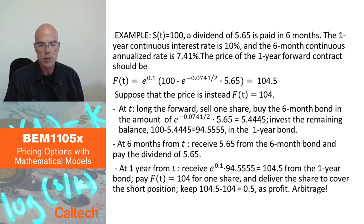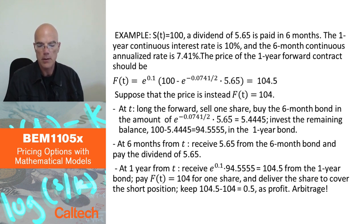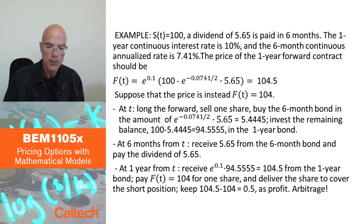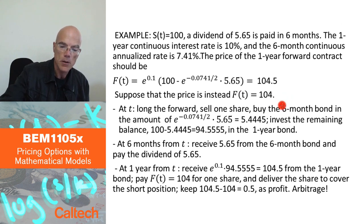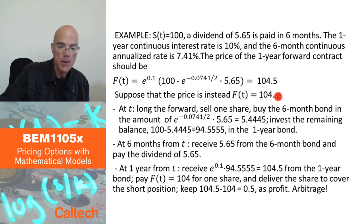I'm going to show just one case where there is arbitrage. Let's say that the price is cheaper than this — for example, let's take the price to be $104. That means the forward contract is cheap relative to what my theoretical formula tells me.